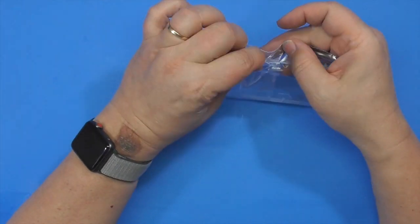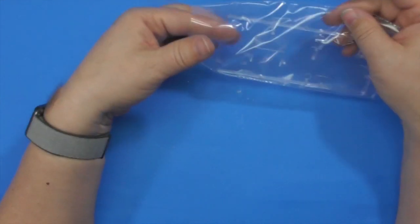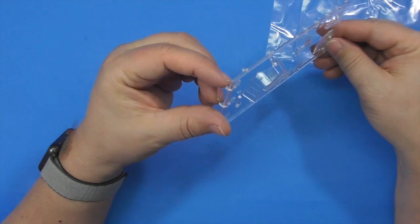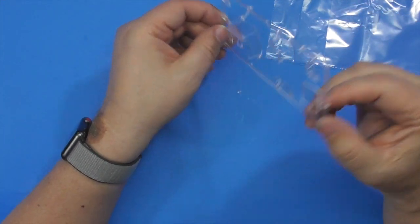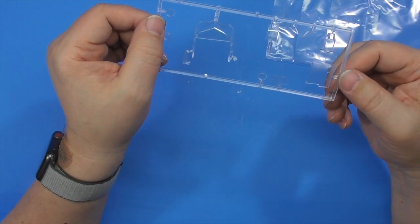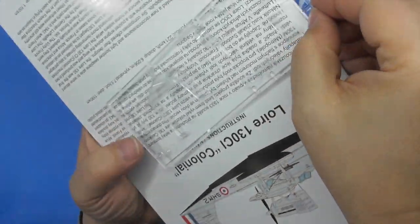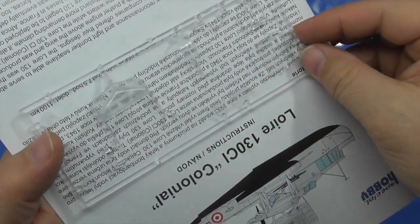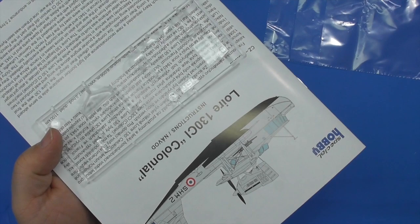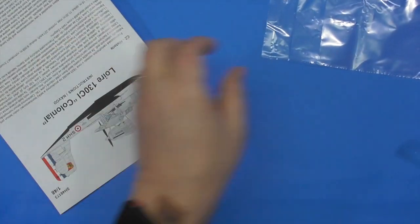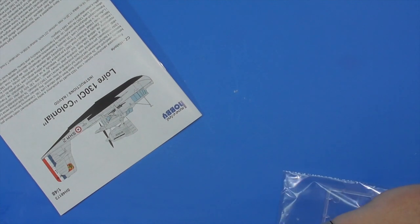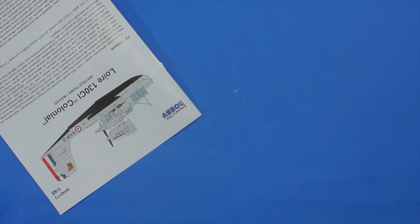And lastly, the clear parts in a resealable bag which is nice. Soft bag too, not all that cranky plastic. Actually, for a short run kit, it's got raised framing. I did not look to see if Eduard makes parts for this. So I mean, judge for yourself. Looks pretty clear to me. It all looks really well nicely detailed. So clear parts get a plus from me.